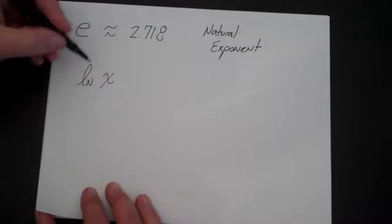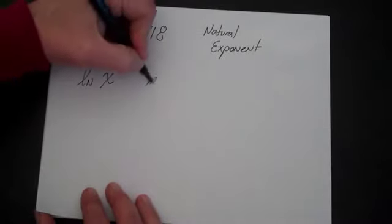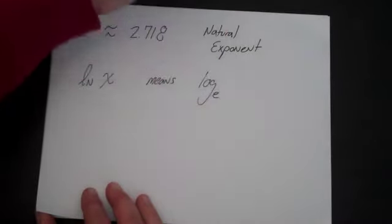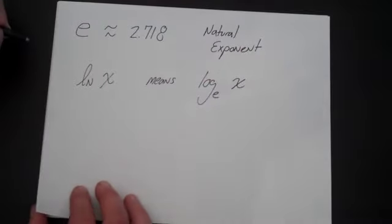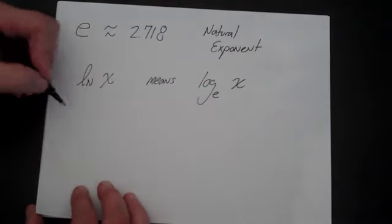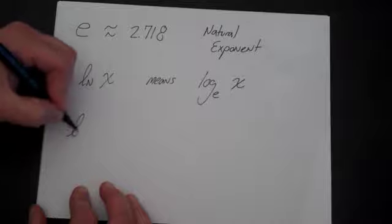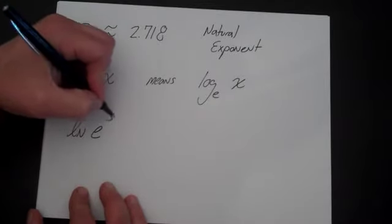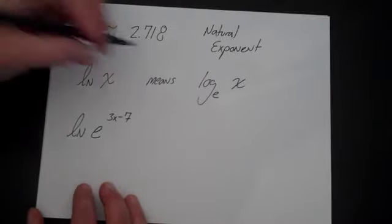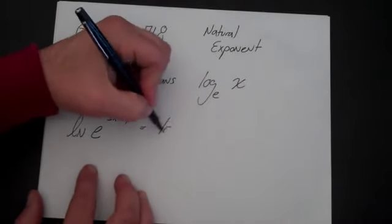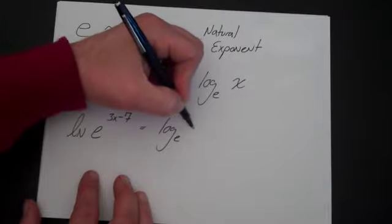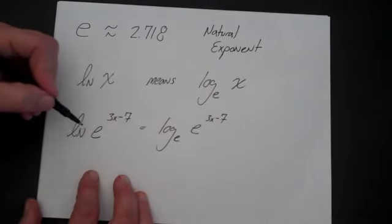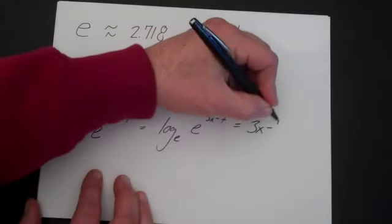So if you see ln(x), then that simply means log base e of x. There's a couple of important things to notice here. First, if you ever have ln of e to the 3x minus 7, well, let's think about what ln is. ln is simply log base e of e to the 3x minus 7. So the ln and the e are inverse operations, so they cancel. So that gives you 3x minus 7. So that's one thing you have to recognize, is that ln, since it's log base e, is the inverse operation of e.